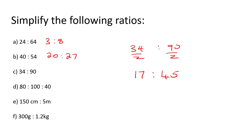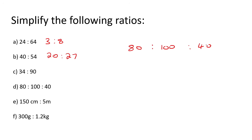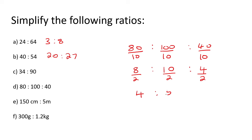Now we get to one with three numbers: 80, 100, and 40. You need to find a number that can go into all three. I'll use ten — that gives me eight, ten, and four. The number two can go into all of those, giving four, five, and two. You might say two can go into four and two, but remember it has to go into all three. So the answer is four to five to two.